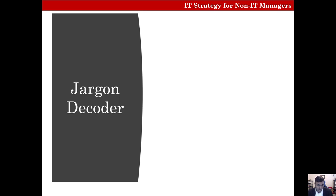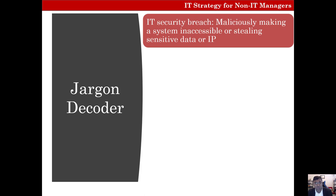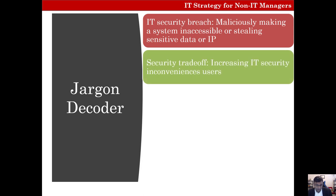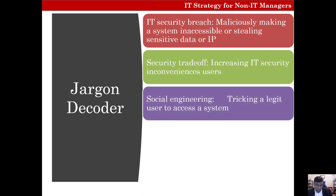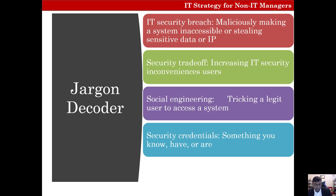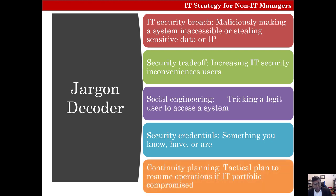Before we start, let's get into some jargon. An IT security breach is a malicious effort to make an IT system inaccessible to its users, or to steal sensitive data or intellectual property. Security tradeoff means that increasing IT security causes more inconvenience to users. Social engineering is tricking a legitimate user to access a system — not a technological way to break in, but tricking somebody out of their passwords. Security credentials are something you know, have, or are — the more the better. And continuity planning is a tactical plan to resume operations if your IT portfolio is compromised.